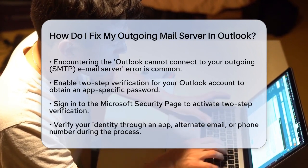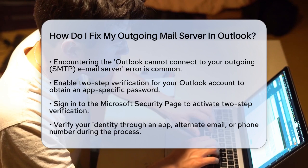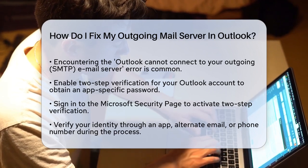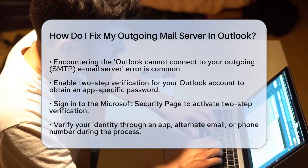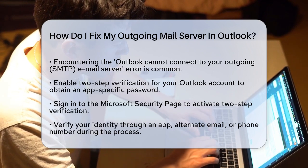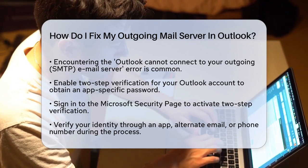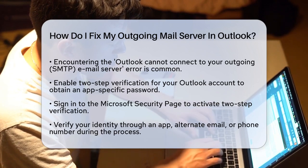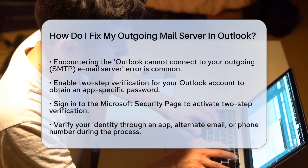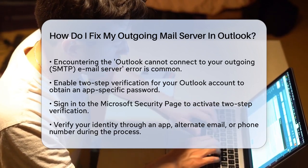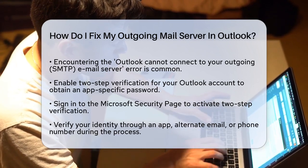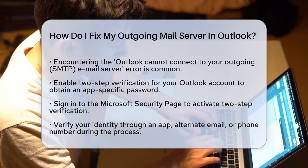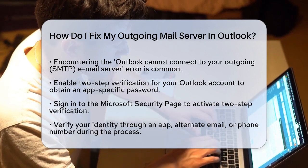First, ensure that your Outlook account has two-step verification enabled. This is a must because you'll need an app-specific password to set up your SMTP settings. To enable two-step verification, sign in to your Microsoft Security page, go to Advanced Security Options or Two-Step Verification, and turn it on. You'll need to verify your identity using an app, alternate email address, or phone number.